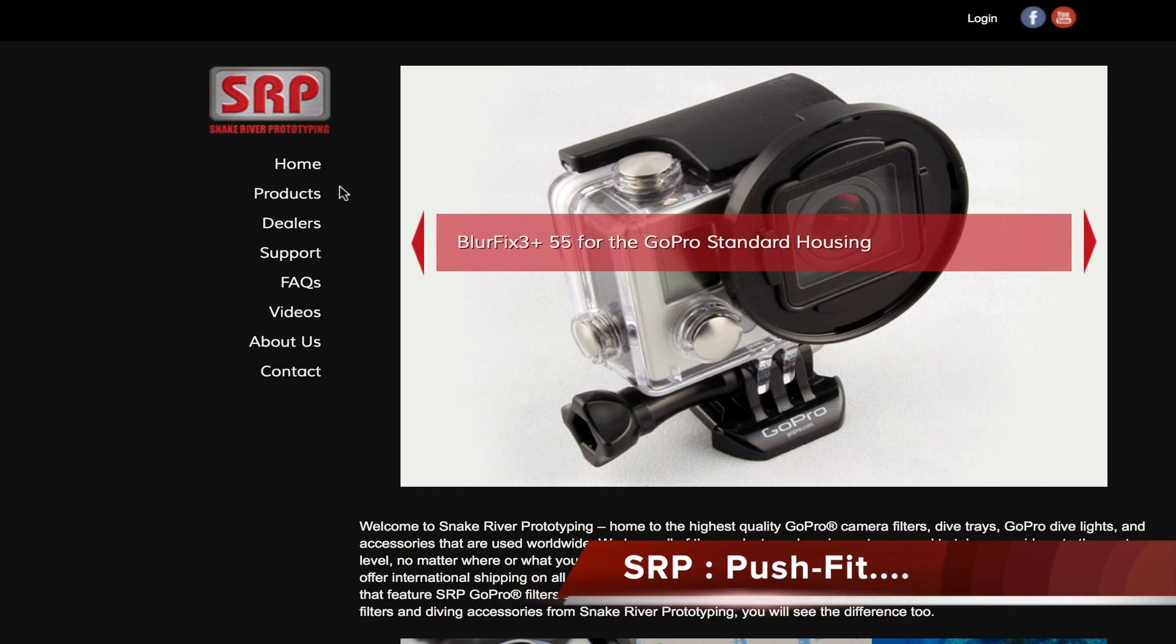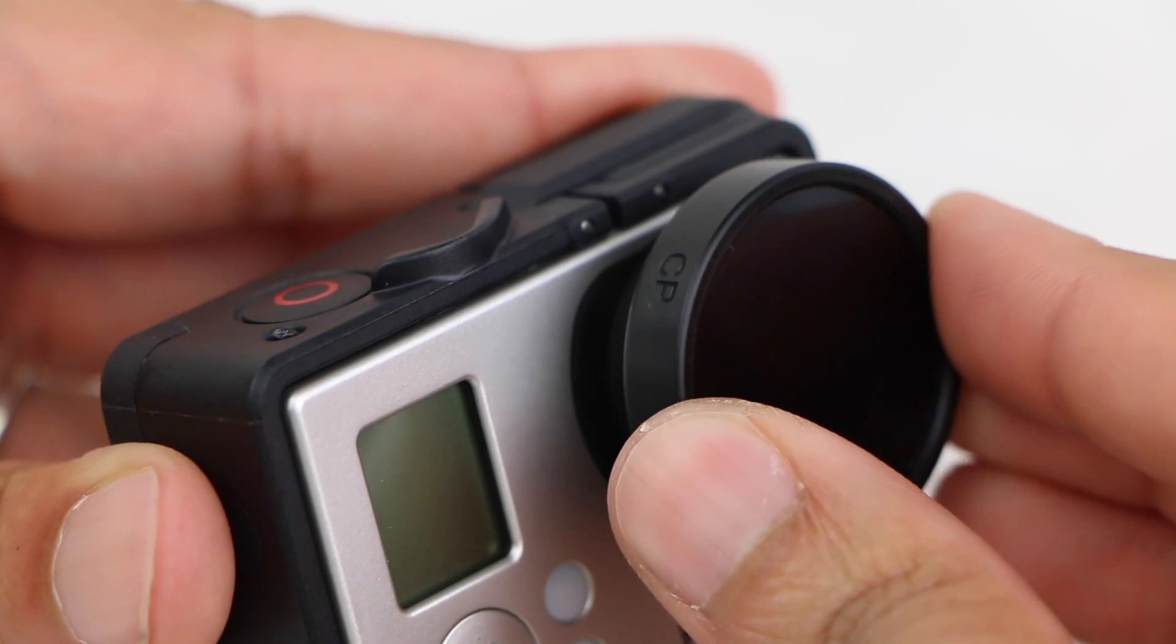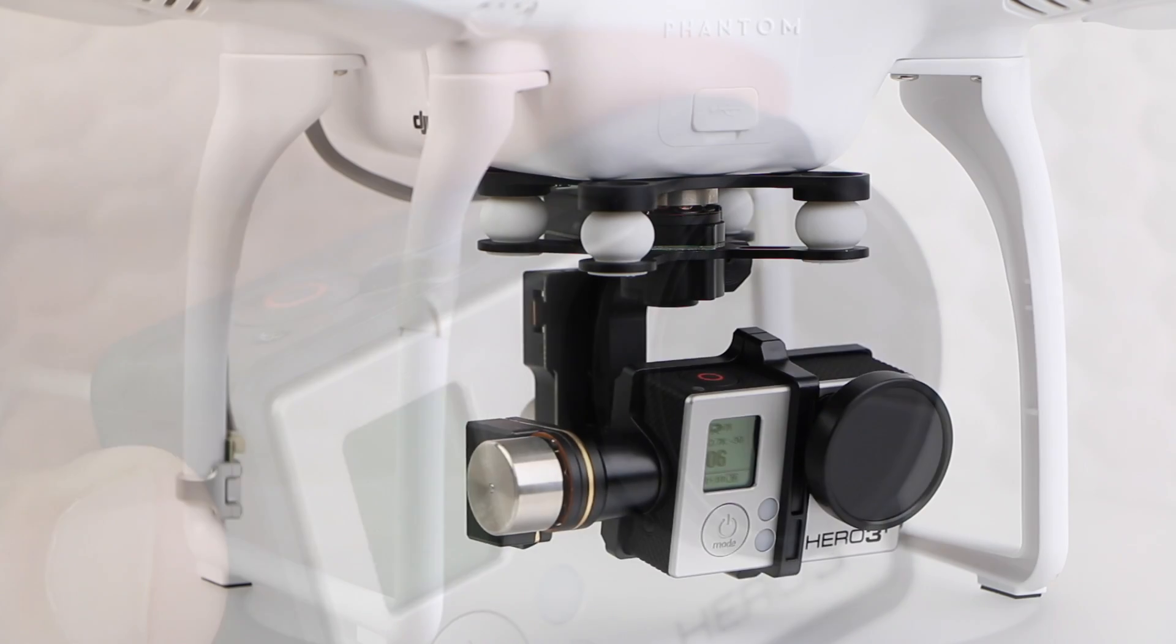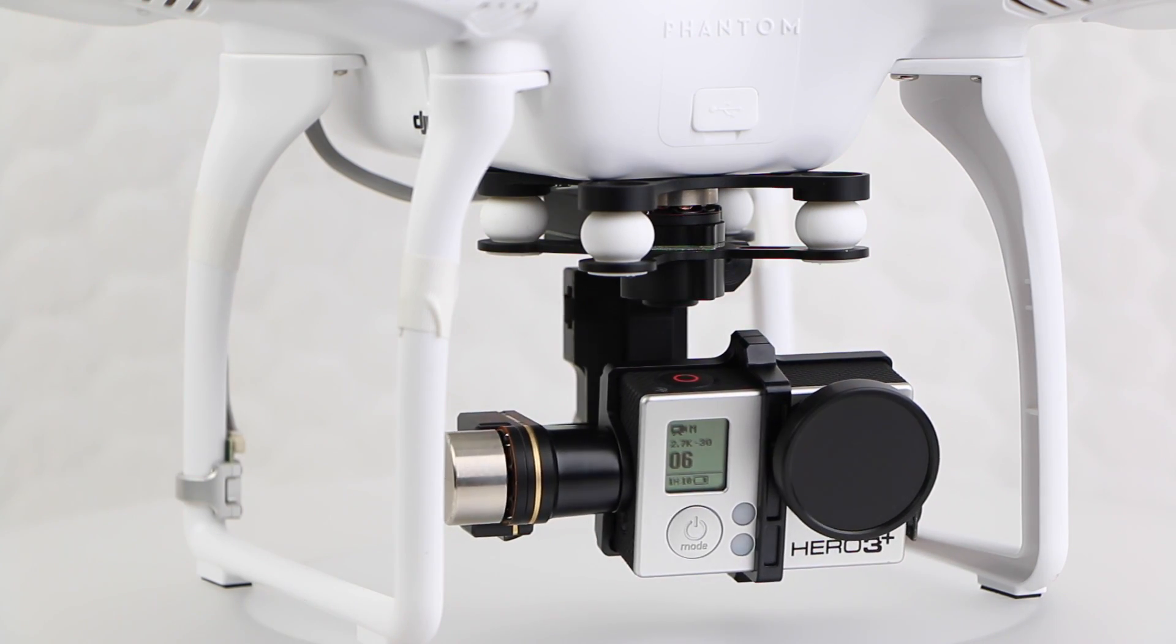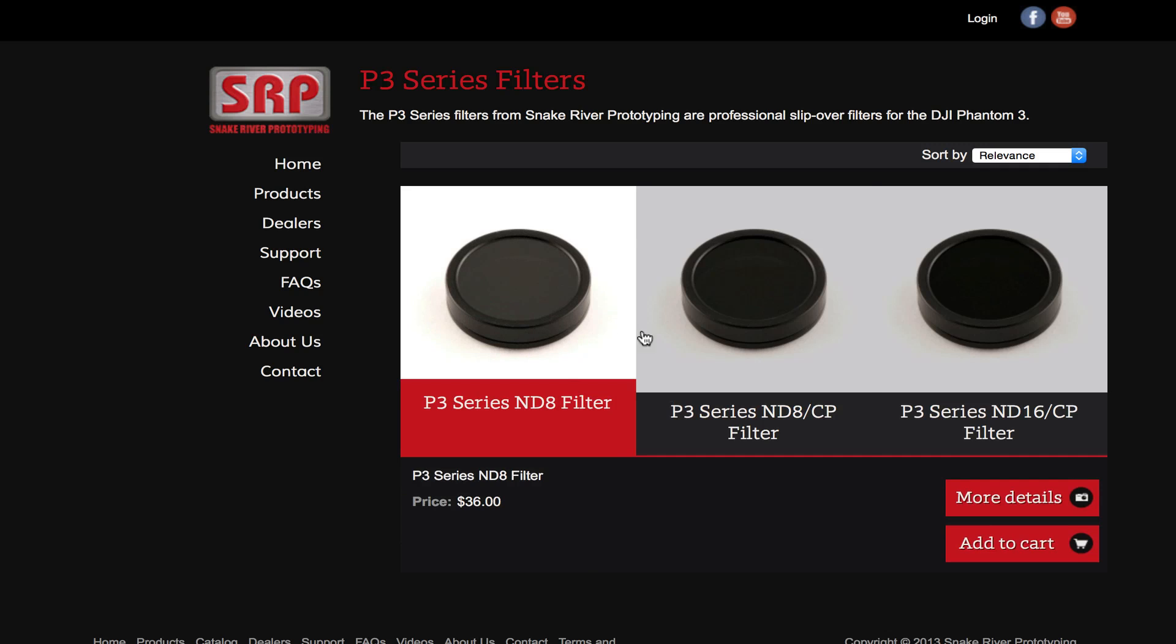Snake River Prototyping are no strangers to filters, with a large range of GoPro and previous Phantom filters already in their ever expanding range. Previous examples have been extremely difficult to fault. They are produced to near perfection and provide higher quality pieces. As a result, these aren't the cheapest filters around.